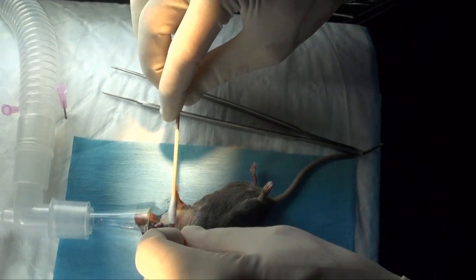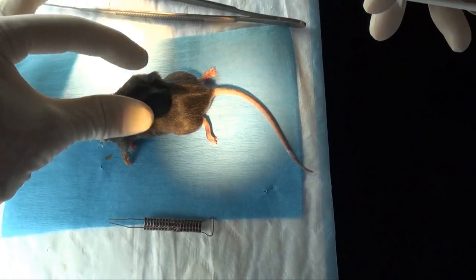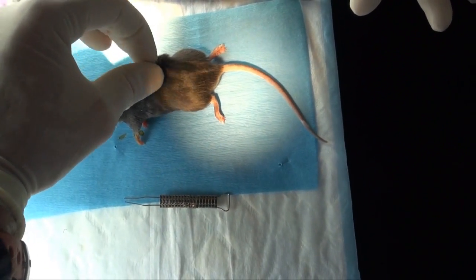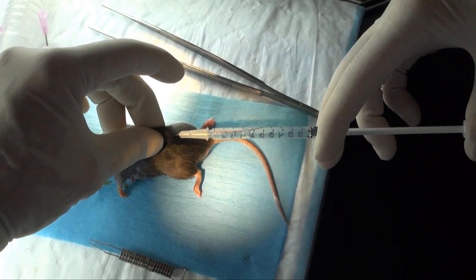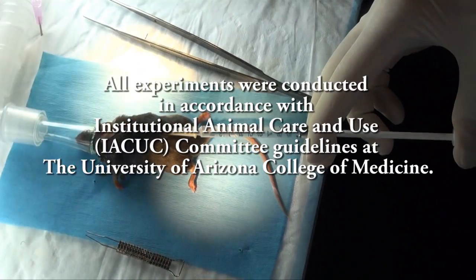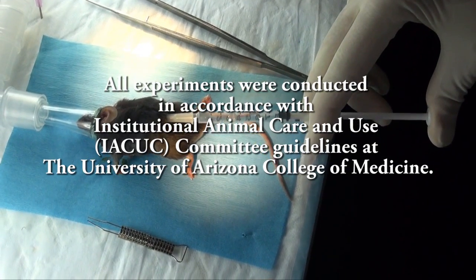Apply antibiotic ointment to the wound. Using your fingers, ensure that the catheter coming out of the pump is not kinked. Subcutaneously inject 0.25 milligrams of buprenorphine in one milliliter of normal saline.